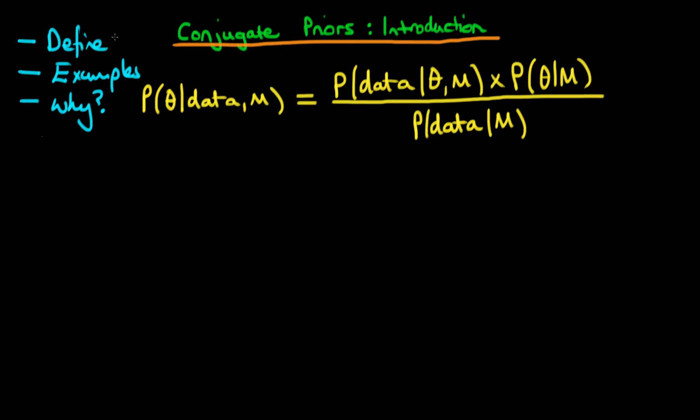Okay, so first of all, what do we actually mean by a conjugate prior? How do we define it? Well, the idea here is that if we have a given likelihood function, so let's say our likelihood, which remember is this part of the numerator. So our likelihood is the probability of our data given our choice of theta and given our model choice.